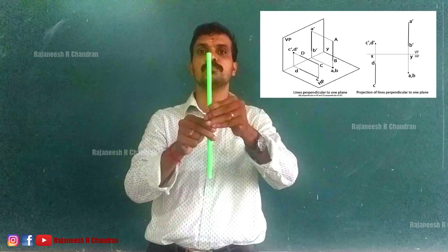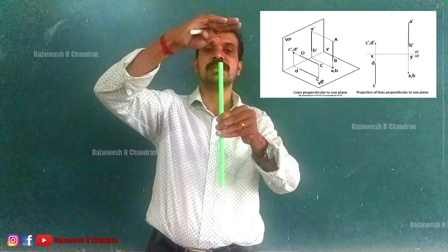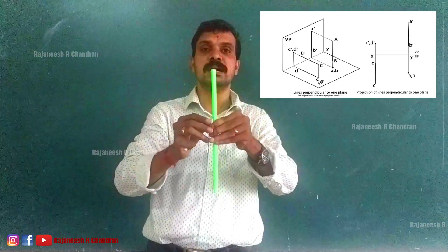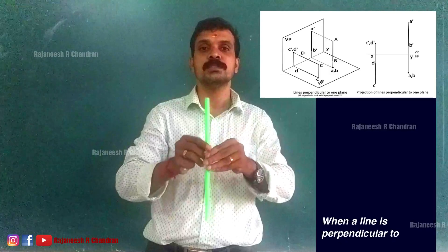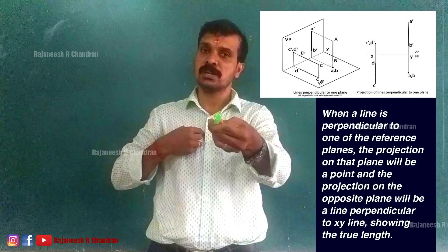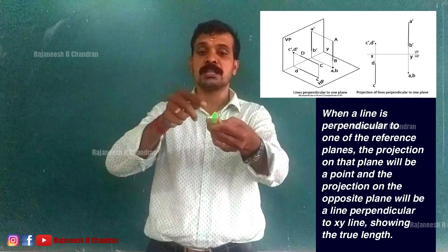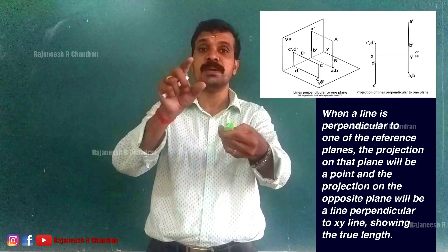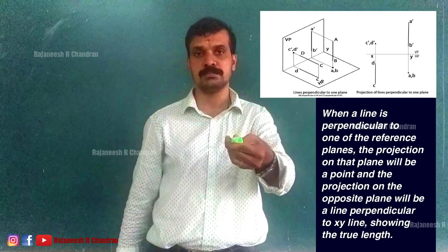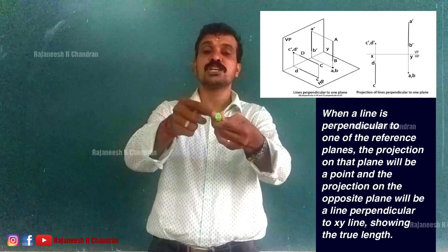The top view will be perpendicular to the XY line. So how do we state all this as a single rule? The rule says: when a line is perpendicular to one of the reference planes, the projection of the line on that plane will be a point, and the projection of the line on the opposite plane will be a line perpendicular to XY showing the true length.